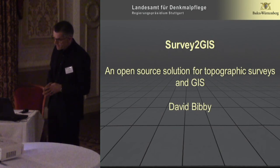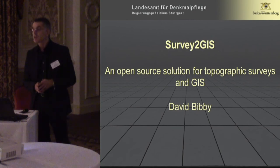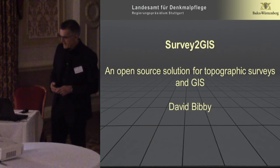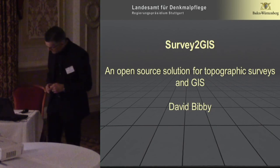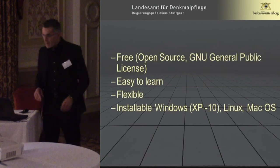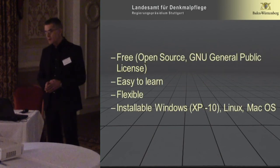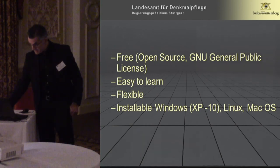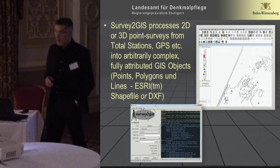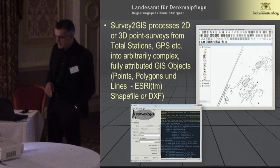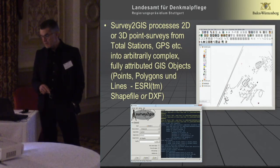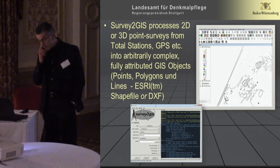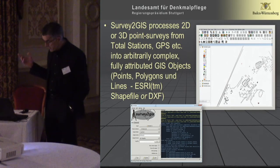Survey to GIS is just such a system. It's an open-source solution for topographic survey and GIS. I say 'Survey to GIS' because it was developed in Germany where we say 'GIS zu GIS,' but I can't change my habit. It's free, open source, published under the GNU General Public License, easy to learn, flexible, and installable on all the main platforms. Survey to GIS processes point data from total stations, GPS, etc., into fully attributed GIS objects — points, polygons, lines, etc. There is also a DXF export function, but our main thrust is certainly GIS.